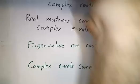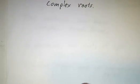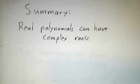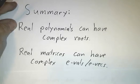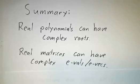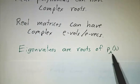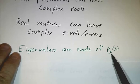So in summary, you already know that real polynomials can have complex roots. And real matrices can have complex eigenvalues and eigenvectors. Because the real matrix will have a real polynomial as its characteristic polynomial. And that polynomial may or may not have complex roots. Nothing wrong with complex eigenvalues.